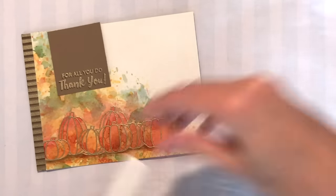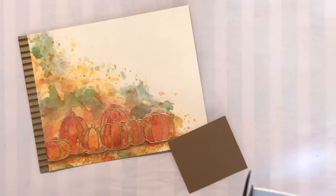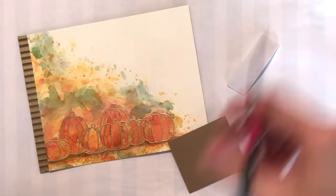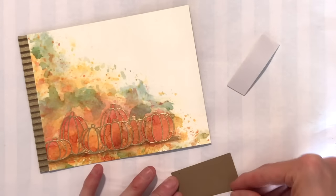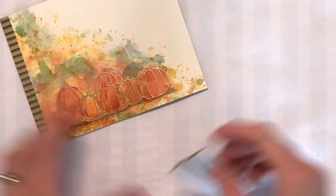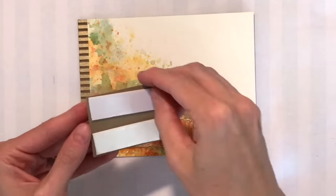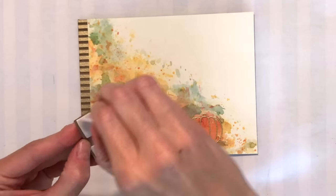Alright, now I got my sentiment. I'm going to use some foam tape, snip a couple pieces off here and then I will adhere it to the upper left side of my card. That foam tape is going to add some dimension, just make it a little bit more interesting. And once I stick that down here, this card is finished.